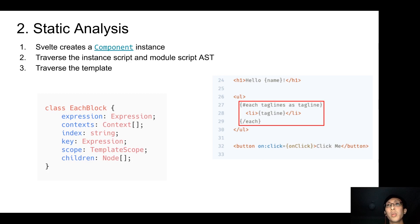In this example, each block records the expression it will iterate through, the key and index, and the scope for its children nodes. In this example, each block creates a scope where it contains tagline. That means that the children nodes within the each block, when it refers to tagline, it refers to the one being declared by the each block, instead of the one being declared in the script tag.